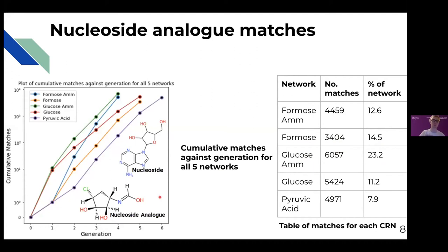This figure is a plot of the cumulative number of matches between the products of a CRN and the nucleoside analogue library against generation number, which is the number of times that the reaction rules have been applied iteratively to a certain network in order to build it up. As you can see in this figure, the number of matches for each CRN increases with generation number, and moreover, the number of matches yielded by each CRN relative to the others changes as generation number increases.